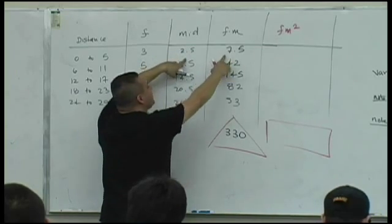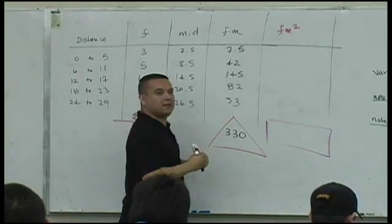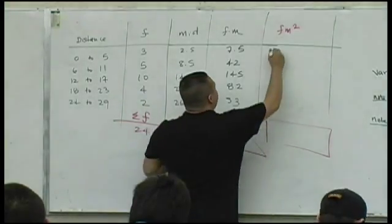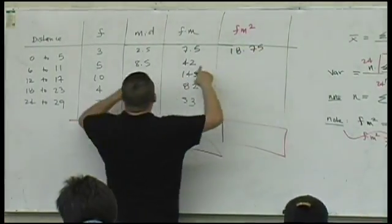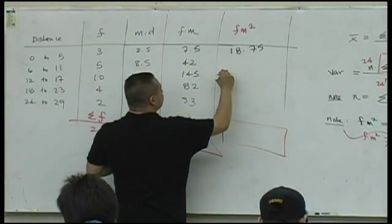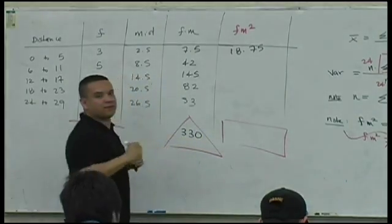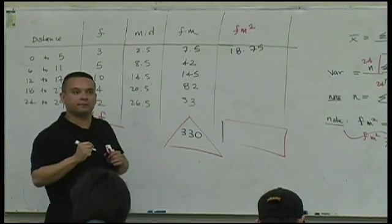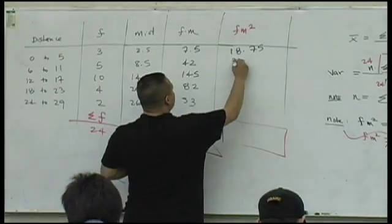2.5 times 7.5. What is that? 18.75. Okay. 8.5 times 42. What's that? What's 8.5 times 42? 357? Okay.